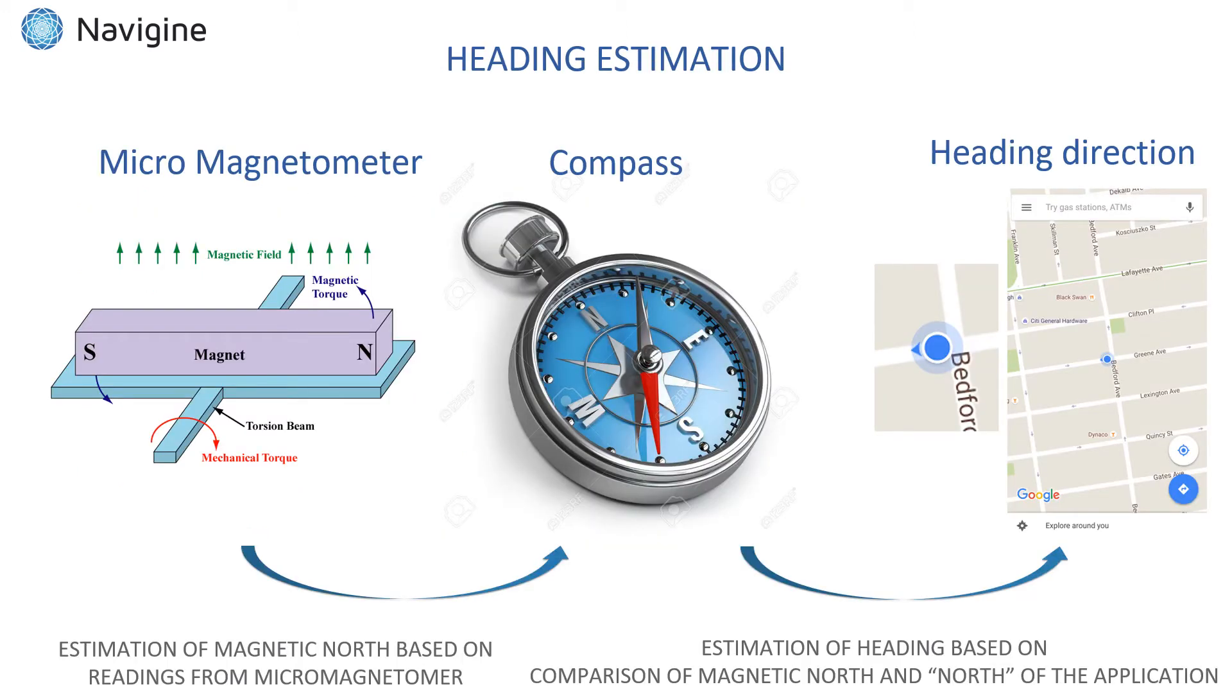The most well-known and established approach for heading estimation in modern gadgets is based on readings from micro magnetometer. The idea of this approach is pretty straightforward. Readings from magnetometer can be interpreted as a simple compass pointing towards magnetic north. Then magnetic north direction is compared with the orientation of the device itself, the top screen direction, to provide real-time heading in most positioning applications.